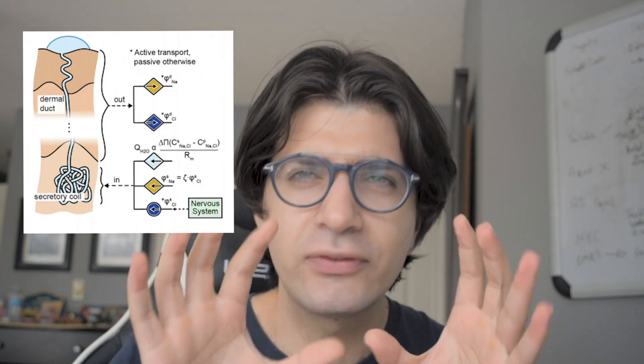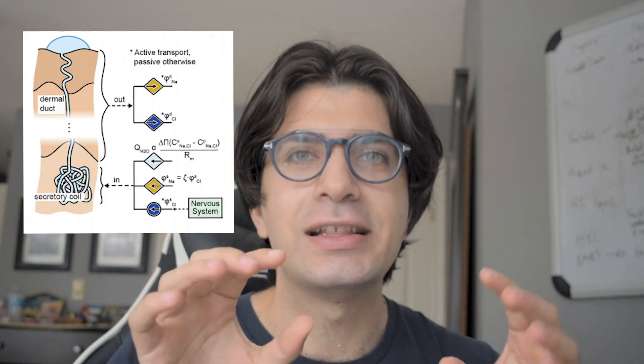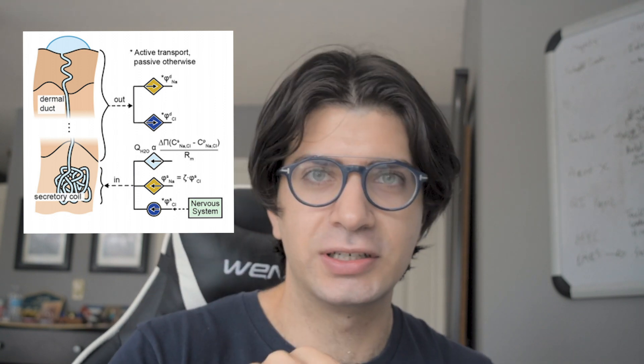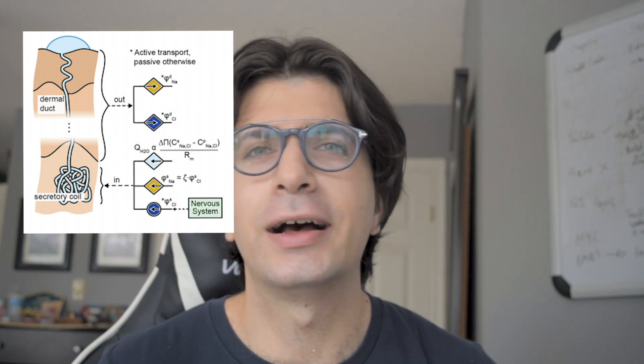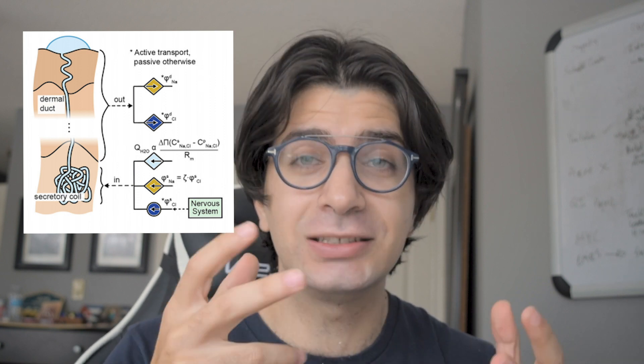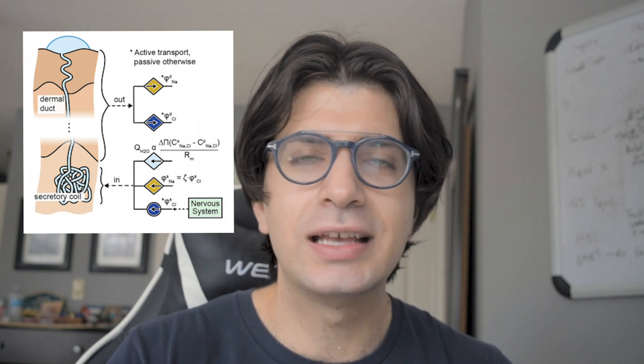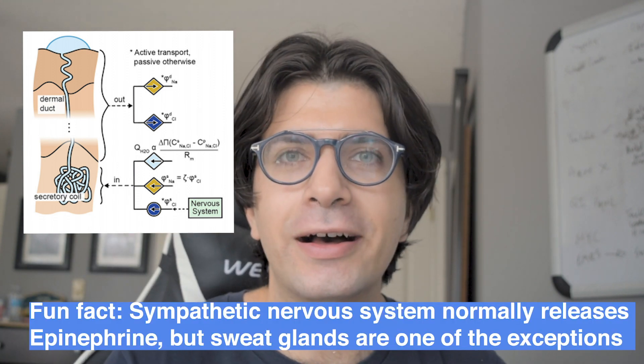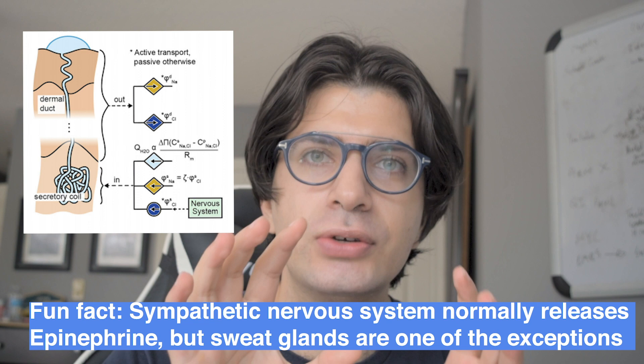I found a paper which I'm going to link below for some additional reading if you're interested. The first step is, we sweat when we are active, stressed, or hot — so that means the nervous system is involved. Particularly the sympathetic nervous system — your fight or flight — is involved. This activates and secretes acetylcholine onto the sweat glands.